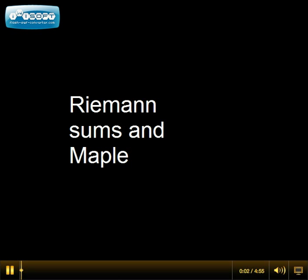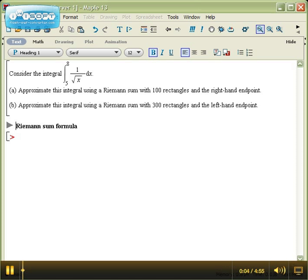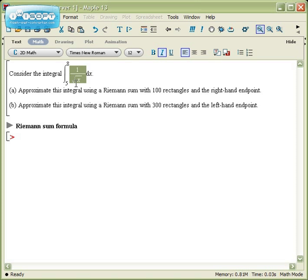Let's take a look at how you'd do a Riemann sum in Maple. Suppose you wanted to find the area underneath the function 1 over the square root of x between 5 and 8 using approximations. Part A says use a Riemann sum with 100 rectangles and the right-hand endpoint. Part B says do the same area with 300 rectangles and the left-hand endpoint.